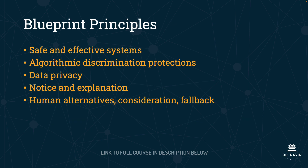These are the five blueprint principles: safe and effective, algorithmic discrimination protections, data privacy, notice and explanation, and human alternatives, consideration, and fallback. We're going to spend the rest of this lecture going over these.